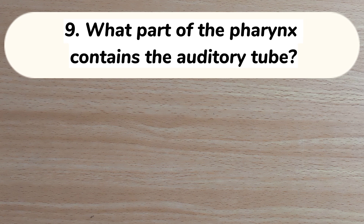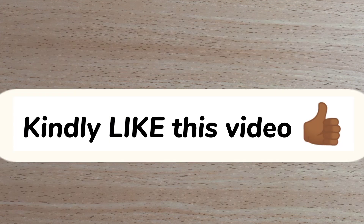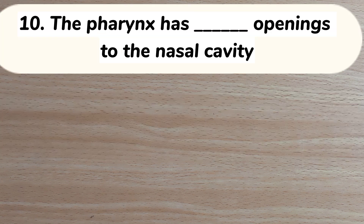Number 9. What part of the pharynx contains the auditory tube? A. Nasopharynx. B. Oropharynx. C. Laryngopharynx. D. Oesophageopharynx. Answer: A. Nasopharynx.